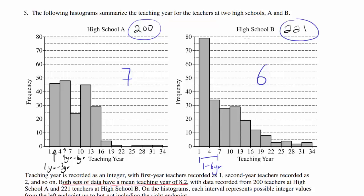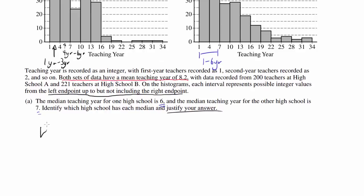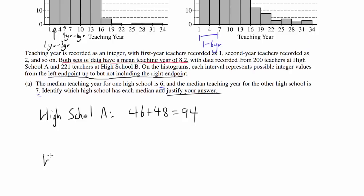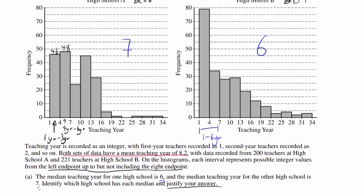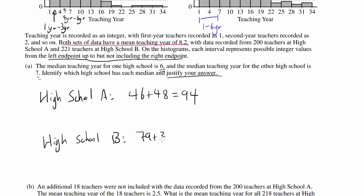For high school A, we're looking at 200 teachers. For high school B, we're looking at 221 teachers. So that may offset which one gets 6 and which one gets 7. So just to check, let's look at what proportion of teachers got 1 year all the way through 6 years. For high school A, the number of teachers that got 1 year through 6 years looks like 46 and 48, so 94. For high school B, that number is around 79 plus 34, which is 113.